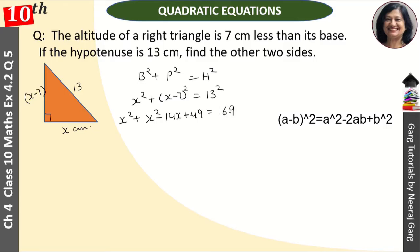We'll take left hand side pe minus ke 169, that is equal to zero. Toh ye ho gaya 2x square minus 14x minus 120 that is equal to zero.